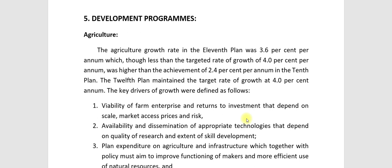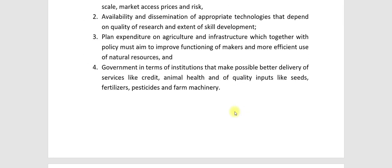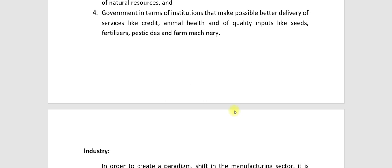Fourth: government, in terms of institutions that make possible better delivery of services like credit, animal health, and of inputs like seeds, fertilizers, pesticides, and farm machinery. Good policy ensures natural resources are used optimally, and farmers receive necessary services and inputs.